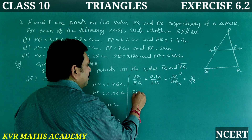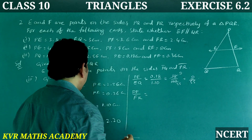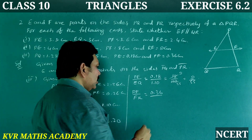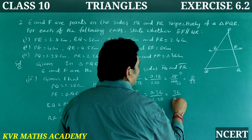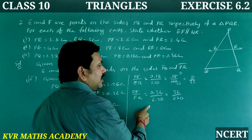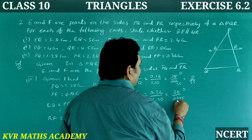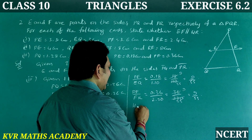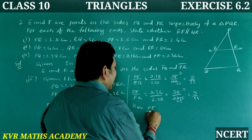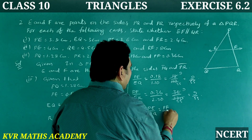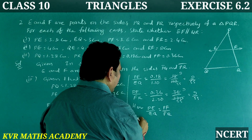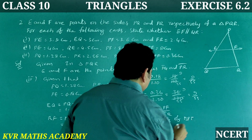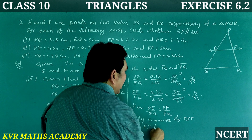PF by FR: 0.36 by 2.20 equals 36 by 220. Simplifying: 4 nines are 36 and 4 fifty-fives are 220, giving 9 by 55. Since PE by EQ equals PF by FR, by the Converse of the Basic Proportionality Theorem, EF is parallel to QR.